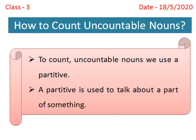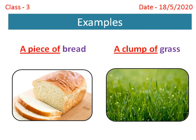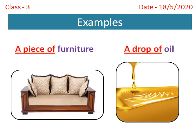To count uncountable nouns, we use a partitive. A partitive is used to talk about a part of something. For example, we say a piece of bread — a piece of is a partitive. A clump of grass — a clump of is a partitive. A drop of oil — a drop of is a partitive.